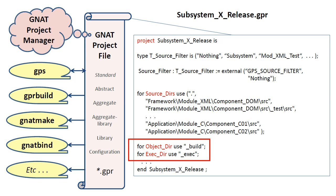Hence, the absolute path for object_dir is R:\_{build}. Because these attributes are declared global to the project, they apply to all scenario cases, which means the object files generated in any scenario will be sent to the _{build} directory at the root of drive R.